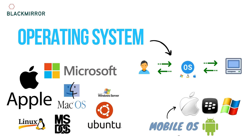For example, we have laptops and smartphones. In the hardware, it is just a piece of hardware, so in the hardware we can use the operating system. For example, if you have a laptop, we can use Windows 7 or Windows 10. If you have a smartphone, we can use Android and iOS.